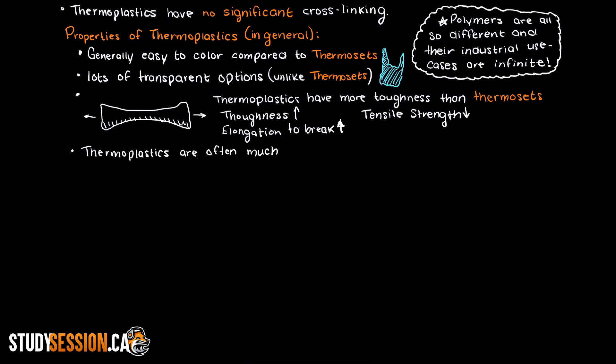In terms of cost, thermoplastics are generally much cheaper than thermosets to produce. This is caused by numerous reasons: they are easy to process and recycle, and they are often less specified than many thermosets, which are often created for one specific application only.